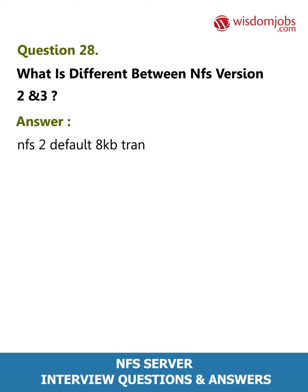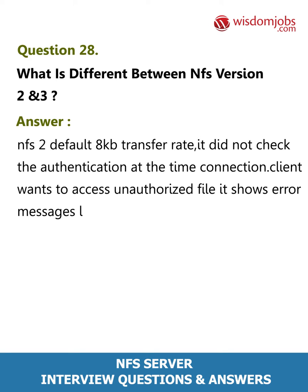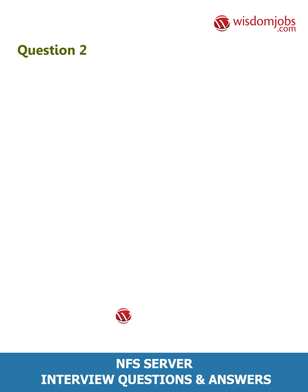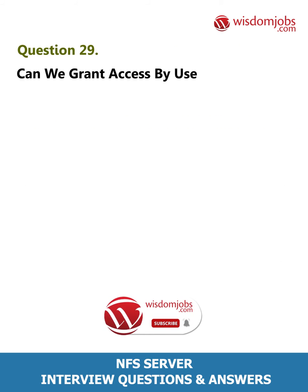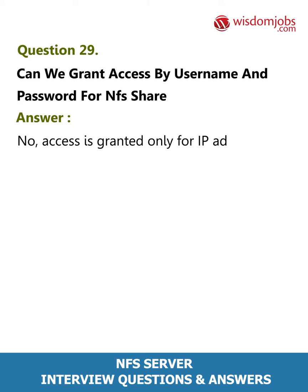Question 28: What is the difference between NFS version 2 and version 3? Answer: NFS 2 has a default 8 kilobytes transfer rate; it did not check authentication at connection time, and when a client wants to access an unauthorized file, it shows error messages like write error or read error. NFS 3 has a 32 kilobytes transfer rate, checks authentication at connection time, and supports ACL. Question 29: Can we grant access by username and password for NFS share? Answer: No, access is granted only by IP address.